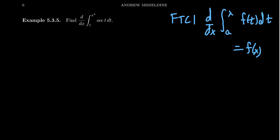In order to use this result, we need a constant a at the bottom of the integral and some variable x at the top. We do have the constant 1 on the bottom, but we have the function x to the fourth on top. How do we compensate for this function x to the fourth as opposed to a plain variable? The answer is we're going to use the chain rule.